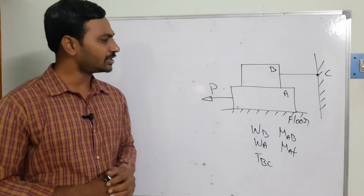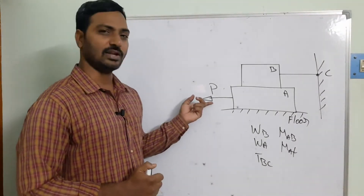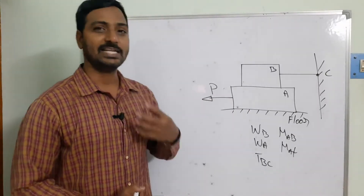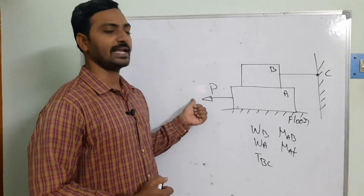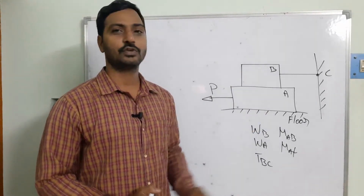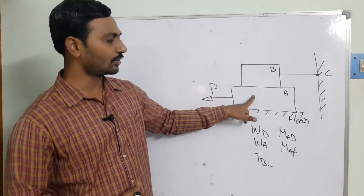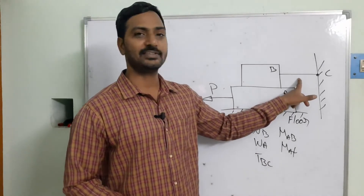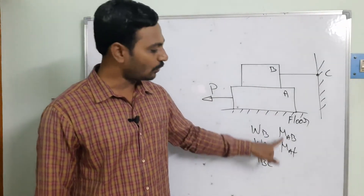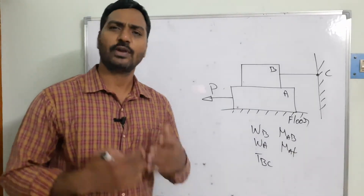When the applied force exists, block A is trying to move in that direction. The frictional force opposes the motion of the body, developing at the contact between the floor and body B. WB is the self-weight of block B, WA is the self-weight of block A, and TBC is the tension in the string. The coefficient of friction between A and B is mu_AB, and between A and the floor is mu_AF.